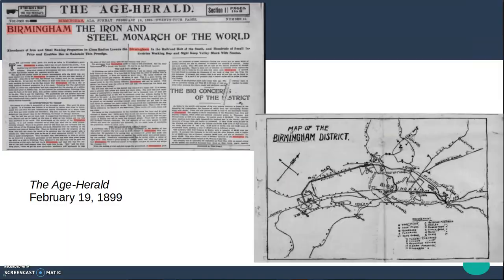If you click on the link or the paper page itself, you can get a view of the newspaper. Here's one up close. This is an issue of the Age Herald — a Birmingham newspaper — and this particular issue ran on February 19, 1899. You can see the article and a nice map of the Birmingham district that was included in the paper that day.